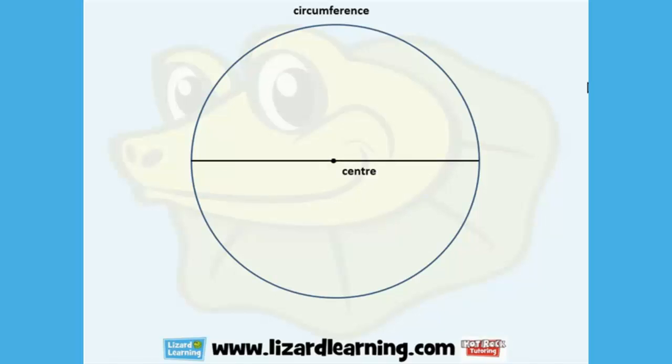Here we have a, well, what is it? Yes, it's a diameter. It goes from one side of the circle through the centre to the other side of the circle.